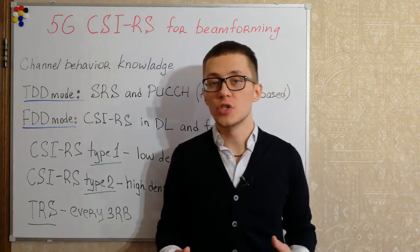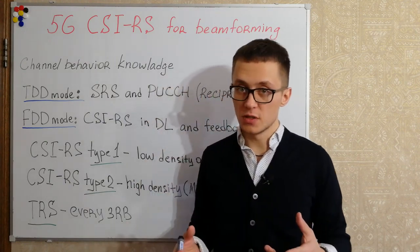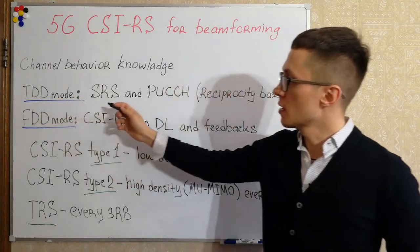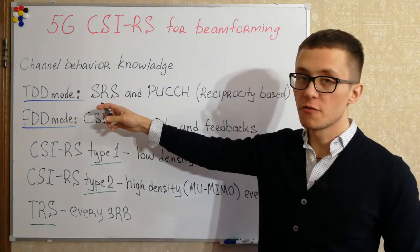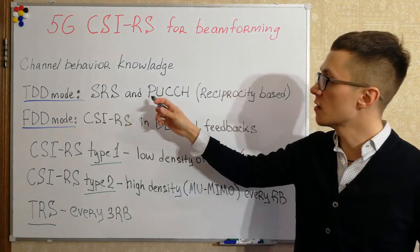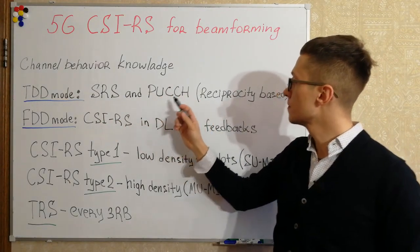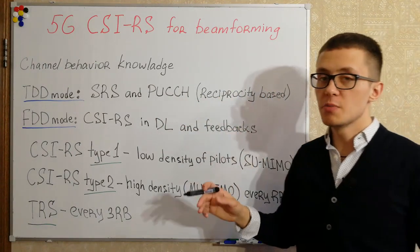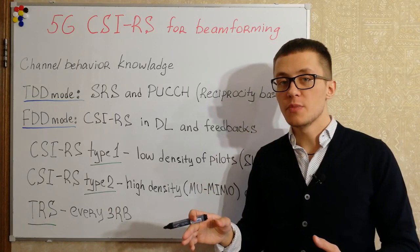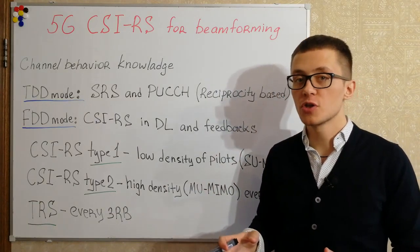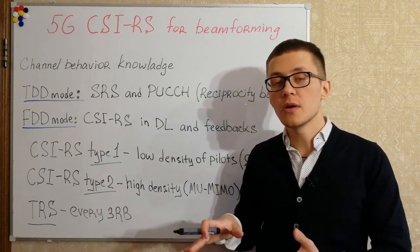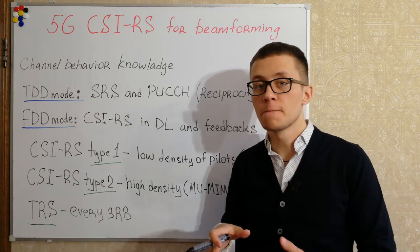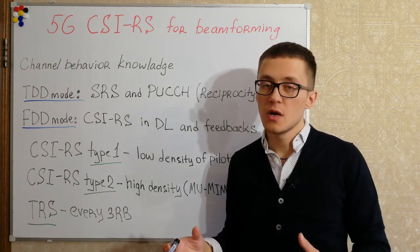Basically in 5G, two methods are used for that reason. The first one is for TDD mode. This is based on sounding reference signals in uplink and a physical uplink common control channel. This is based on reciprocity — it means that channel estimation can be performed just in one direction because downlink and uplink operate on the same frequencies and channel behavior is relatively the same.